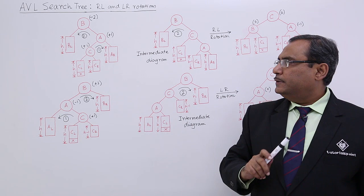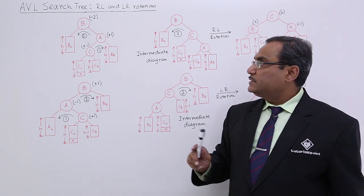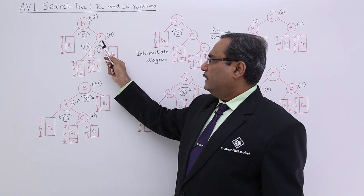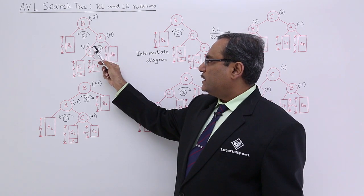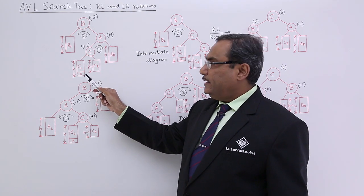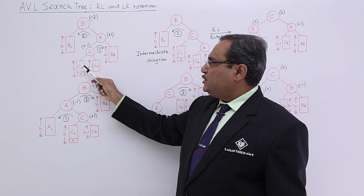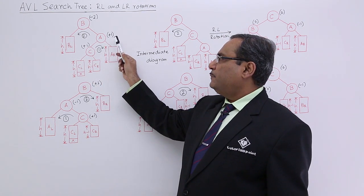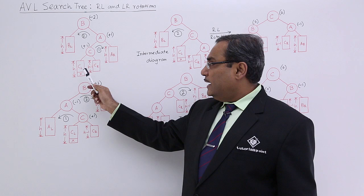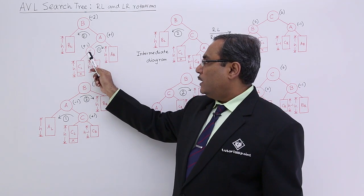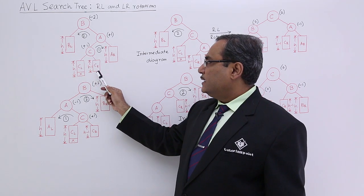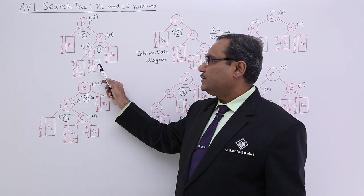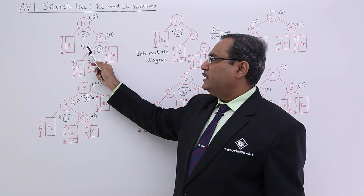Now let us calculate the balance factors. For A it is H plus 1 and it is 1 plus 1 plus H, so it is H plus 2. H plus 2 minus H plus 3 equals minus 1, so we get plus 1. For B it is H plus 1 and it is H minus 1 plus 1, so it is H plus 1 and this is H, ultimately giving plus 1.